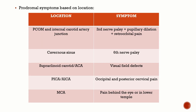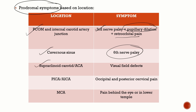Berry aneurysms are usually asymptomatic and only present when they rupture as SAH. However, if the aneurysm is in a certain location causing compressive symptoms, it can cause prodromal symptoms. An aneurysm at the posterior communicating artery and internal carotid artery junction can cause third nerve palsy with pupillary involvement and retroorbital pain — pupillary fibers in the third cranial nerve are at the periphery, so compressive pathology causes pupillary involvement. An aneurysm in the cavernous sinus causes sixth nerve palsy.